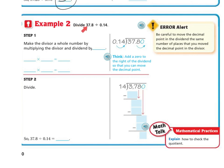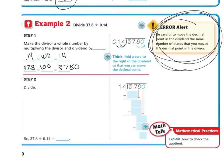Let's do another example: 37.8 divided by 0.14. To make the divisor a whole number, it looks like we have to move over two spaces, so we multiply by 100. 0.14 times 100 gives us 14. Error alert — be careful to move the decimal point in the dividend the same number of places. Since I moved the divisor decimal two places, I move 37.8 two places to get 3,780, adding a zero. Then my decimal goes above there.